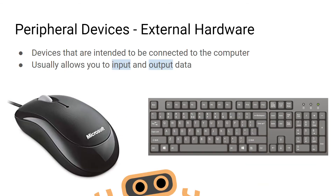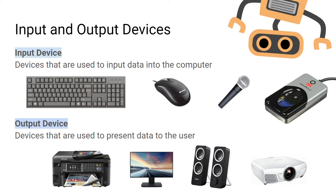A peripheral device is an external piece of hardware that usually adds some form of functionality to a computer system. Input devices are used to put data into the computer — some examples include a keyboard and a microphone. An output device is used to present data to the user, and examples include a printer or a speaker.